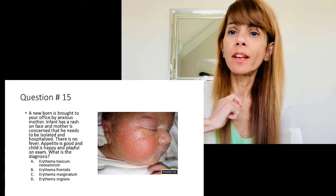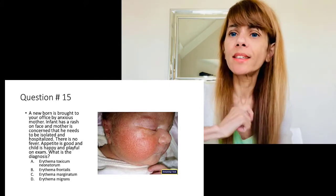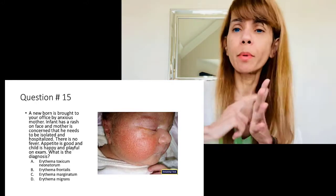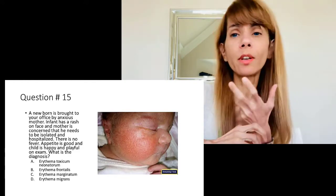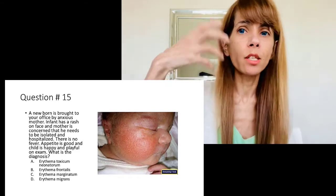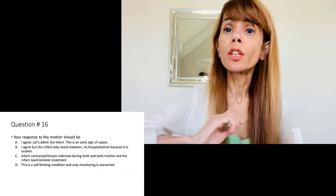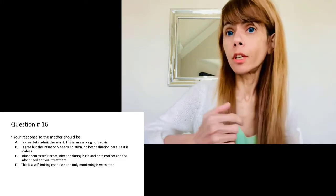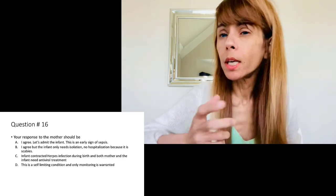Question fifteen is a newborn infant brought by the mother, who is very concerned — the child has a rash all over his face. However, the child is happy, healthy, eating, drinking, and sleeping. On examination, he looks pretty healthy and has a maculopapular erythematous rash on the face that is a little weepy and oozy. The question asks what you should do. The correct answer is that this is erythema toxicum neonatorum — a very benign, self-limiting condition. You don't need to do anything except reassure the mother.